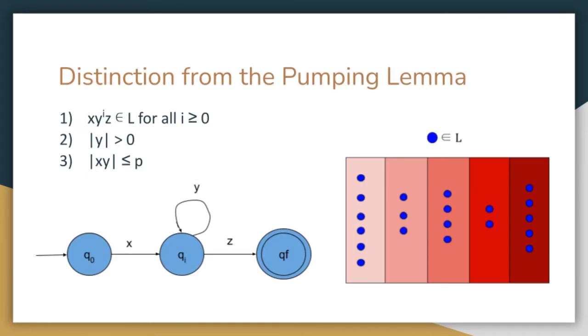Now, I will discuss the difference in how the pumping lemma and the Myhill-Nerode theorem prove that a language is non-regular. The pumping lemma involves considering all ways in which an arbitrary string from a language L can be split into three parts x, y, and z and satisfy three properties. The first property being that x, y to the i, z is an element of L for all i greater than or equal to 0. The second property being that the length of y is greater than 0. And the third property being that the length of x concatenated with y is greater than the pumping length.